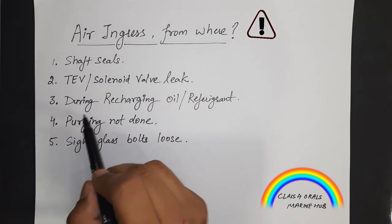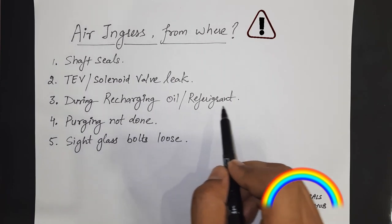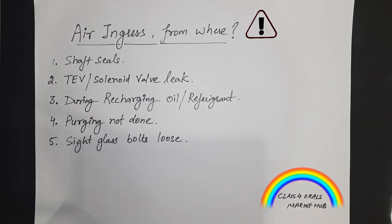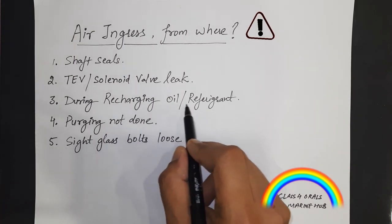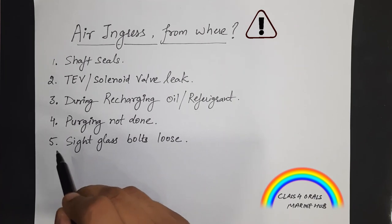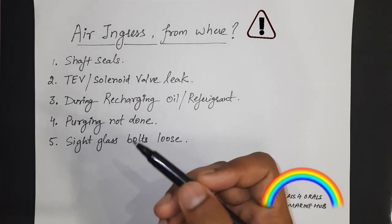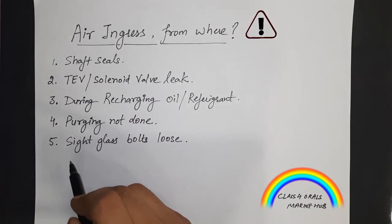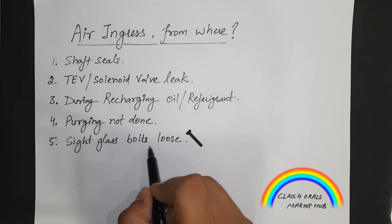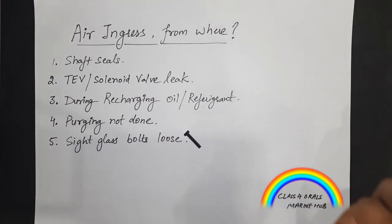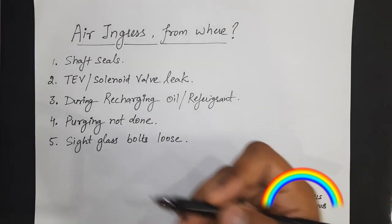Third, during the recharging of the oil or the refrigerant, when the filling point is exposed to the atmosphere during refrigerant or oil recharging, the air can enter. Fourth point, if the purging is not done properly or is not done at all. The last point: the sight glass bolts might be loose; therefore, from the loose bolts, the atmosphere can also find its way into the system.